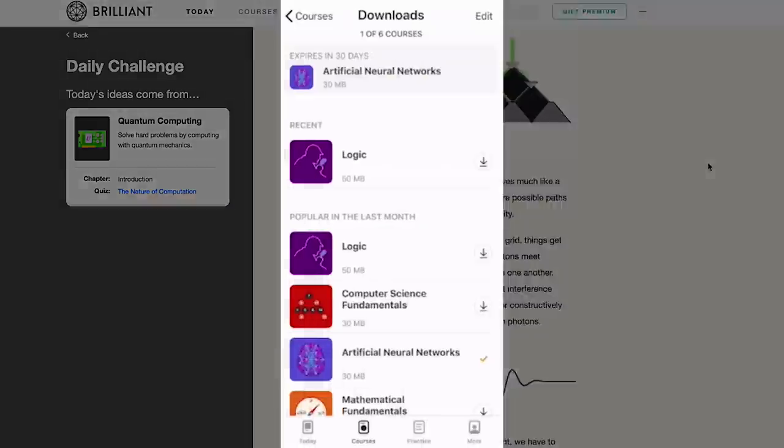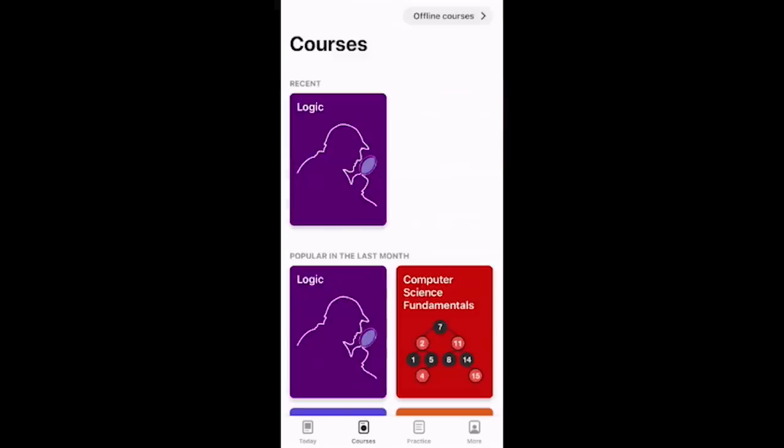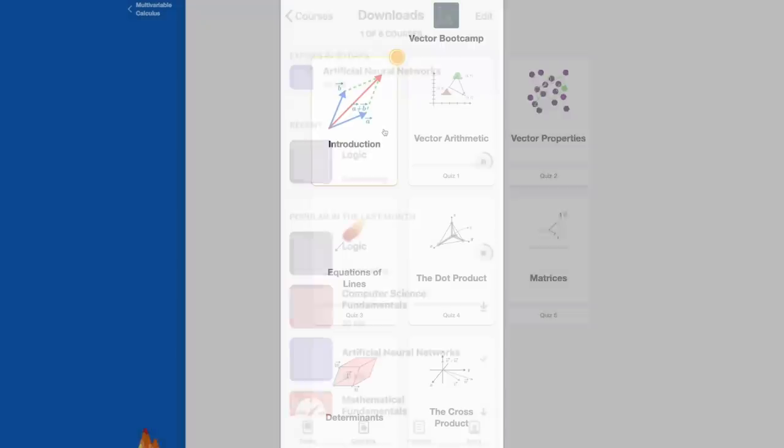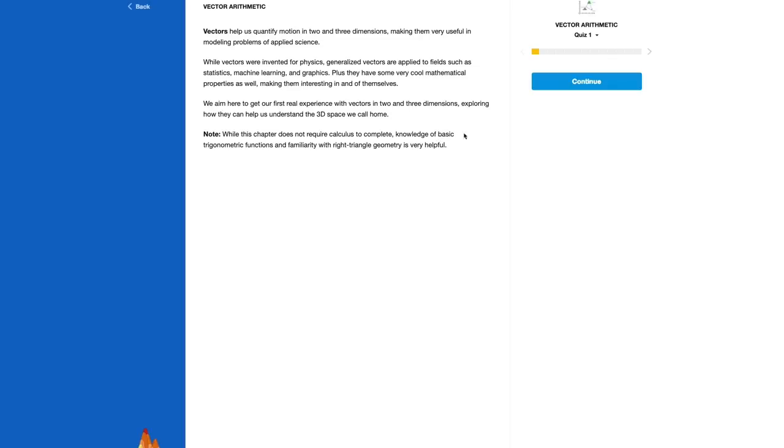Brilliant also includes daily challenges that turn learning into a habit. These questions range from what happens when you cut a Mobius strip in half, to probability games within quantum systems, and much more to give you a range of topics to look forward to learning. Plus, they now have offline courses for iOS and Android, so you can download some of your favorite courses right to your phone. You can learn something new and stay productive whether you're commuting to work or school, traveling, or just somewhere with terrible internet.